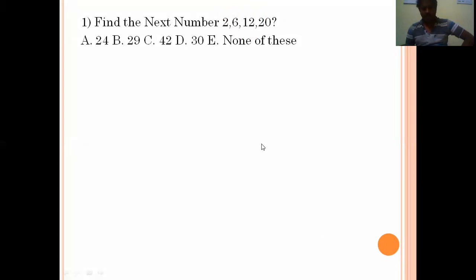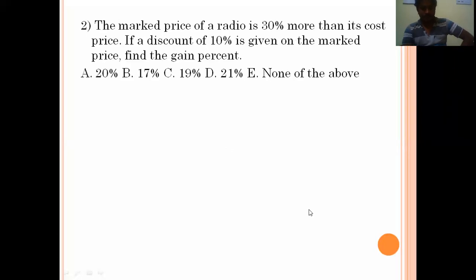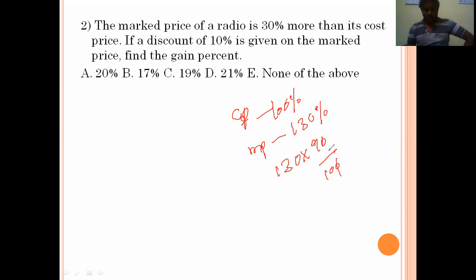The market price of radio is 30 percent more than its cost price. If a discount of 10 percent is given on the market price, find the gain percentage. Cost price we always take as 100 percent. Market price is 30 percent more than cost price, means 130 percent. On this 130, he gave 10 percent discount, means the customer pays 90 percent. 90 percent of 130 is 117 percent. This 117 percent is 17 percent more than the cost price, that means 17 is the profit percentage. Option B is the right answer.